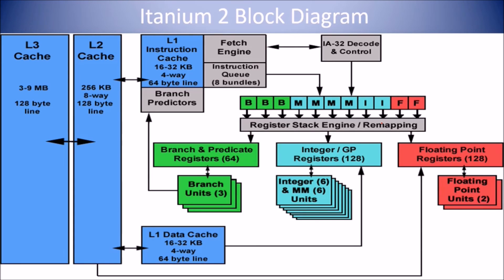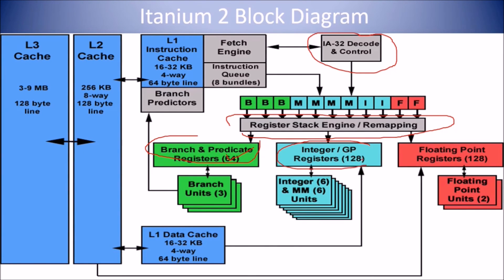Here is the Itanium 2 block diagram. The register stack engine is hardwired. There is an IA-32 decode control unit, branch and predicate registers (64-bit), integer registers (128), branch units, integer and memory units, L1 cache, L2 cache, L3 cache, floating-point registers, and floating-point units.